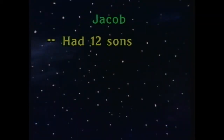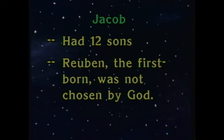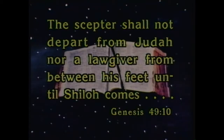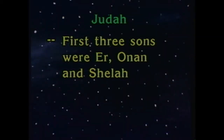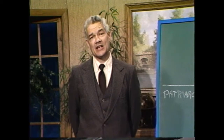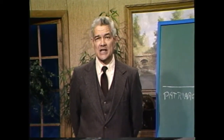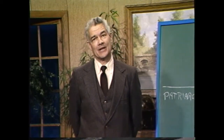Jacob had twelve sons. God did not choose the firstborn who was Reuben, or the firstborn by his favorite wife which was Joseph, but instead in his sovereignty he chose Judah and said, 'The scepter shall not depart from Judah nor a lawgiver from between his feet until Shiloh come.' Judah had three sons: the first was named Er, the second was named Onan, and the third was named Shelah. The first two boys married the same woman and both of them died. According to law, the father was then to give the next brother unto her that that brother might raise up seed in the name of his deceased brethren. But Judah elected not to do that.